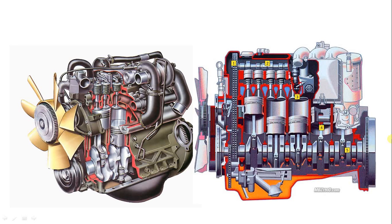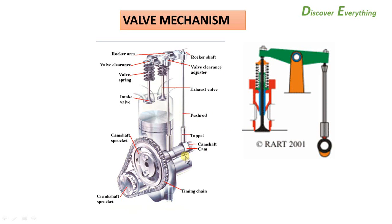The flywheel connects to the clutch, and the clutch connects to the gearbox in the engine. This is the cross-section. Next is the valve mechanism — the inlet and exhaust valves open and close via one camshaft driven by a chain drive.